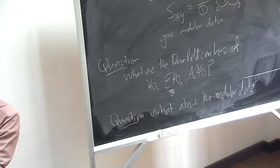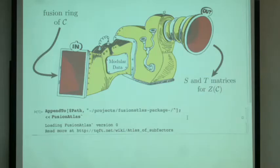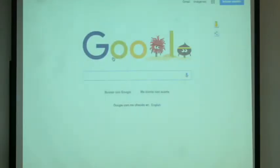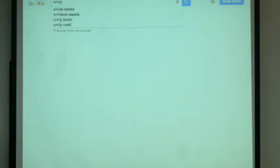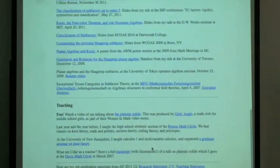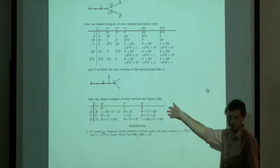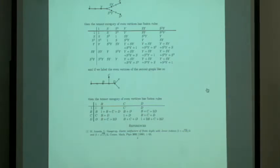To use the machine, you download a current copy of the fusion atlas from Bitbucket, load it, and it says okay, loading. Let's find an example to run this on. Let's look at Emily's homepage — she has this great little note from ten years ago where she writes down explicitly the fusion ring of one of the fusion categories coming from Haagerup.